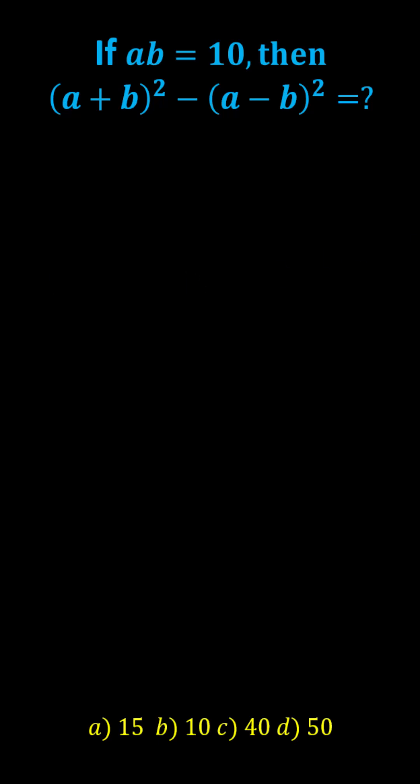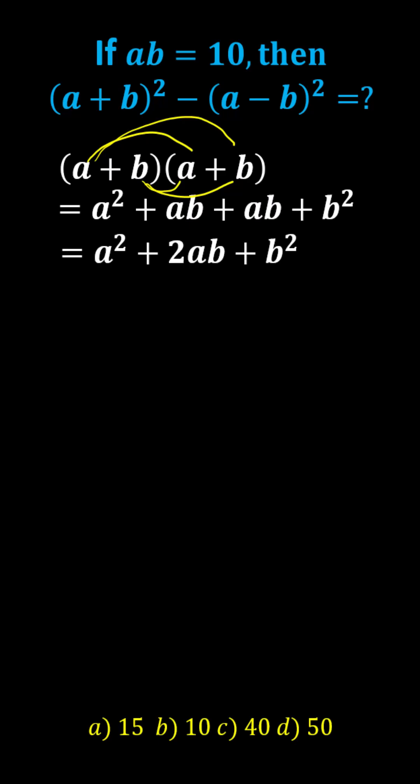The square of A plus B, we have two factors of A plus B, and there are no shortcuts. We have four products: 1, 2, 3, and 4. Simplifying the square of A plus B is A squared plus 2AB plus B squared.